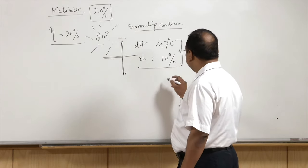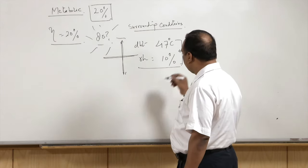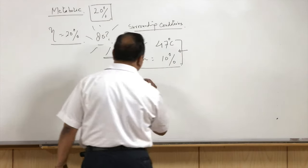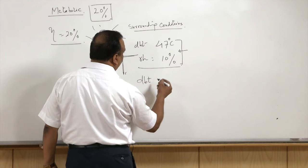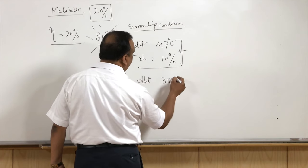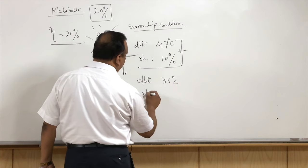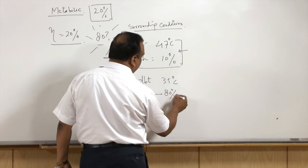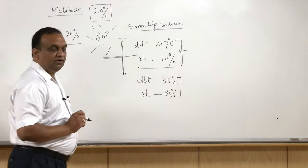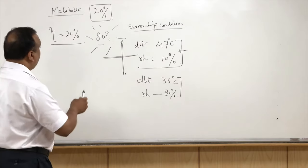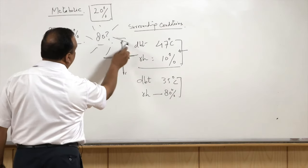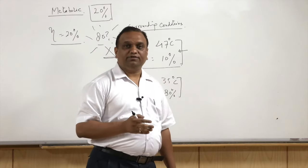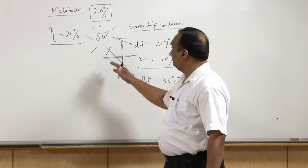Another extreme climate is the coastal area. The dry bulb temperature typical of a coastal climate may be 35 degree centigrade and relative humidity may shoot up to 70 or 80 percent. Heat dissipation from the human body will differ in these conditions — the mode of heat dissipation will differ between these two extremes.